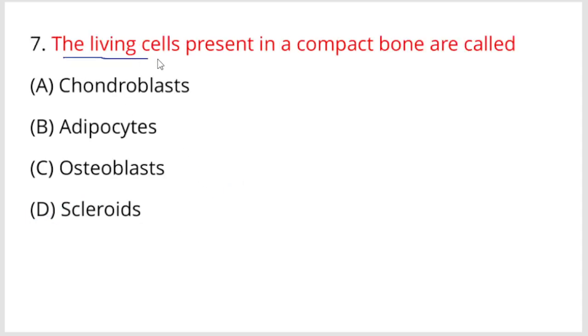Next, compact cells present in a compact bone are called what? The living cells present are osteoblasts. Option C is the right answer. Osteoblasts are present in compact bone.